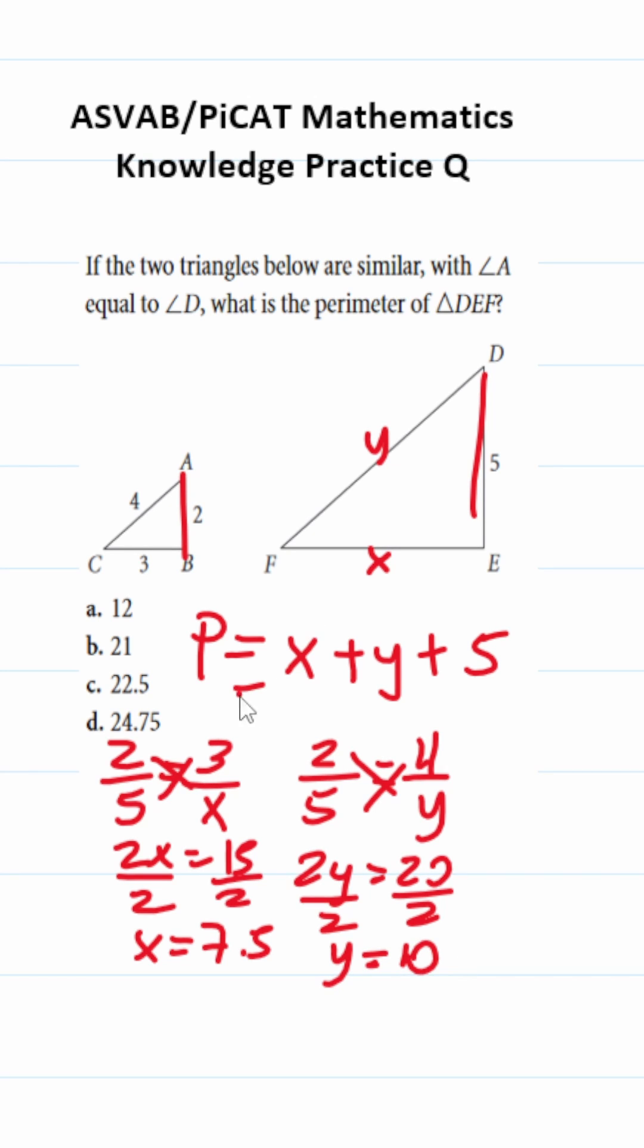So now we can just plug those values in. This is 7.5 plus 10 plus 5. If you do that math quickly, it's going to be 22.5, which is